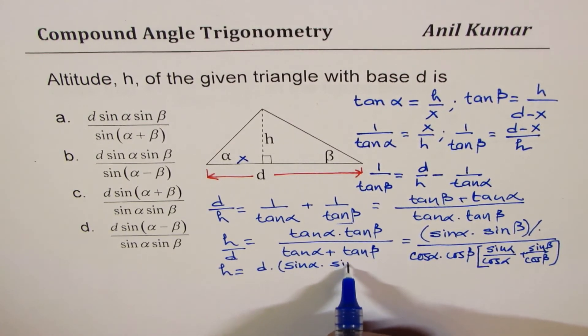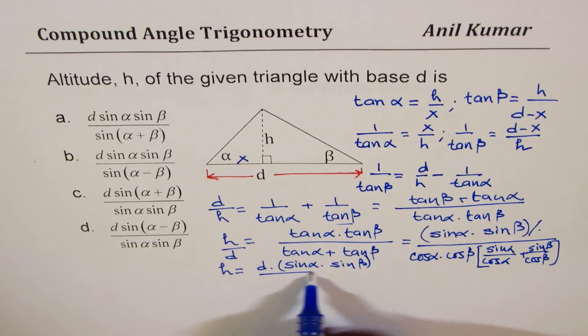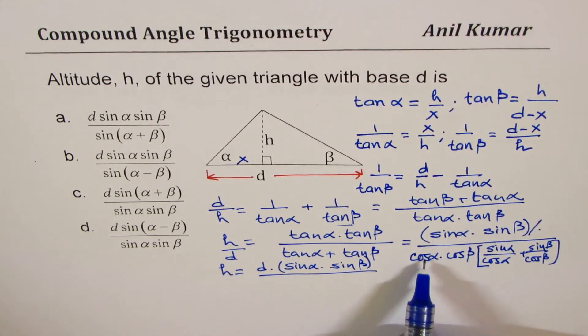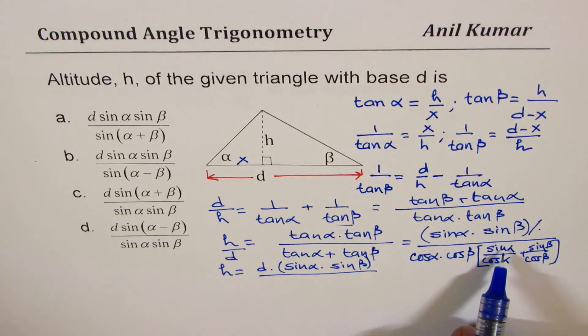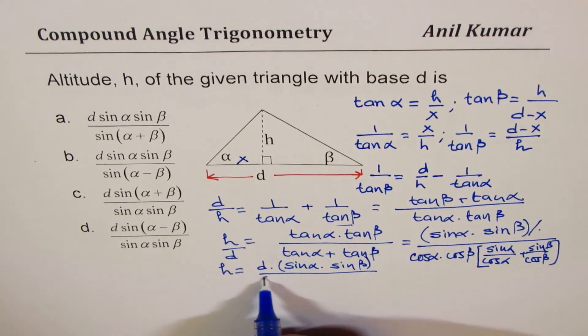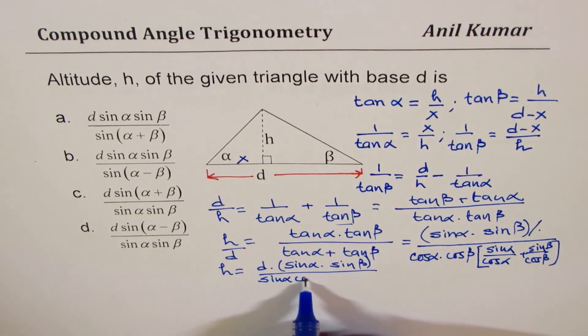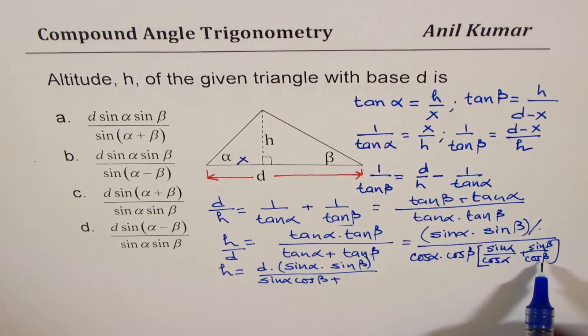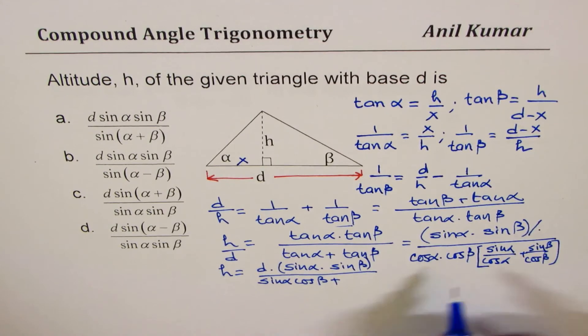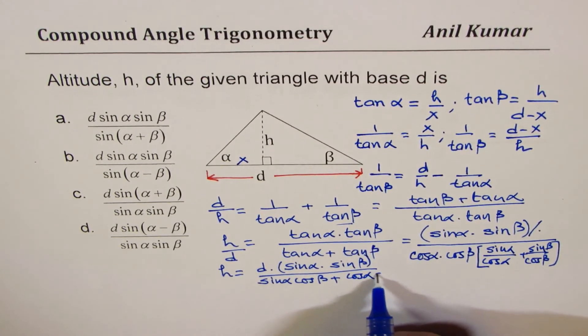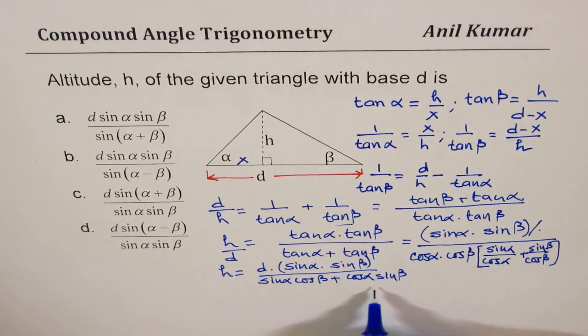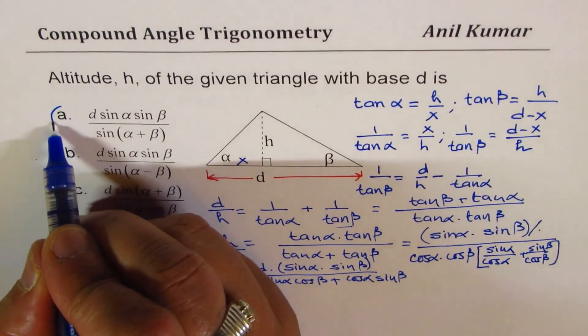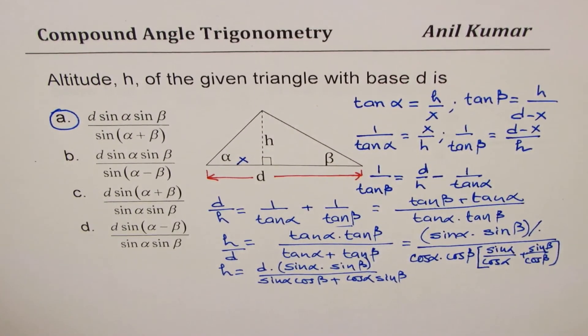And in the denominator when you open this with the first term cos α gets cancelled, so we have sine α cos β, plus in this part cos β gets cancelled, so we get cos α sine β, which is sin(α + β). So we get option a as the correct option.